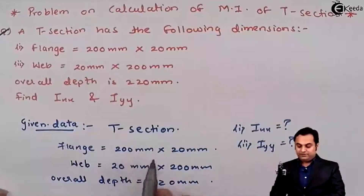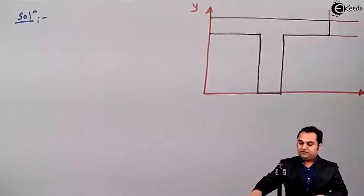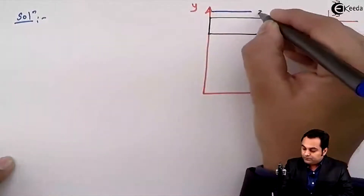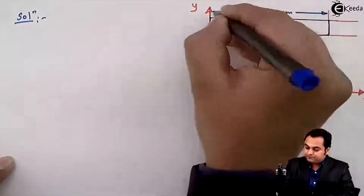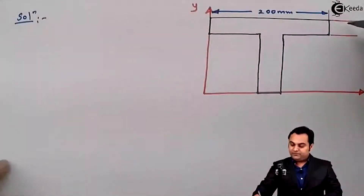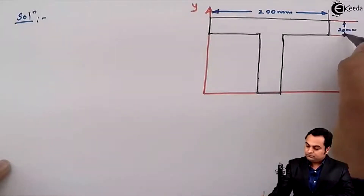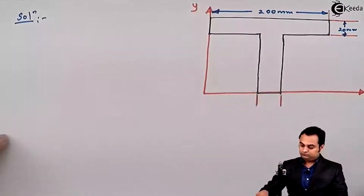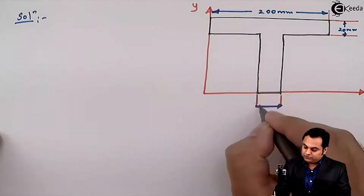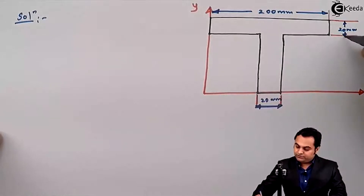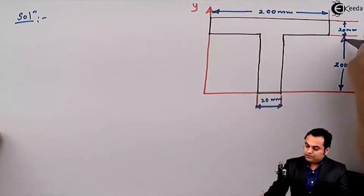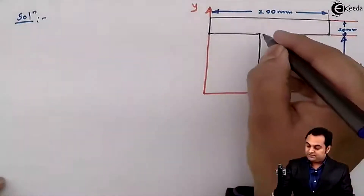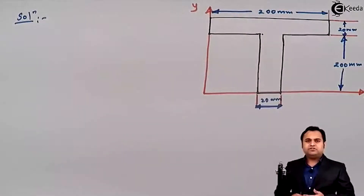The flange has dimensions 200 × 20, so this topmost portion is the flange. The width of the flange is 200 mm and the depth is 20 mm. The web, which is the central portion, is 20 mm × 200 mm. Adding these together, the overall depth becomes 220 mm, so this diagram is correct.